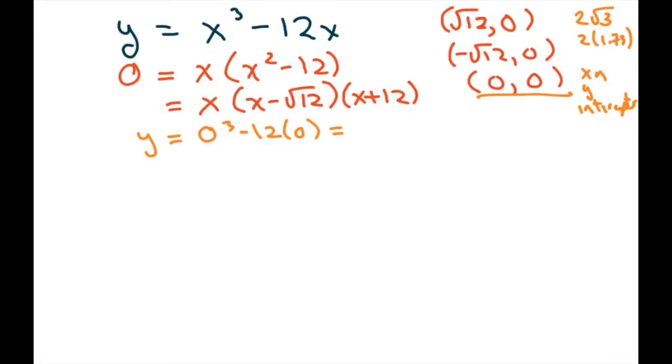And so we're going to do a derivative of y with respect to x. And that's going to be 3x squared minus 12. So set the derivative to 0 and solve for x. I'm going to pull out a 3 here. x squared minus 4.